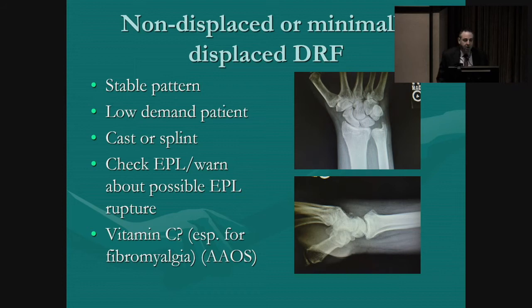What do we do with a non-displaced or minimally displaced distal radius fracture? If it's a stable pattern in a low-demand patient, you can treat that in a cast or a splint. You should check the EPL function when the patient presents because it's not uncommon to have a rupture of the extensor pollicis longus in a non-displaced fracture.